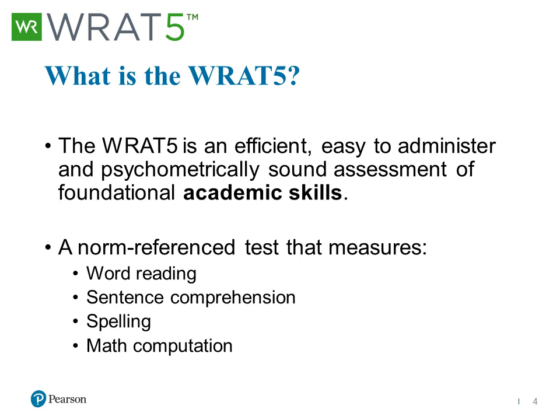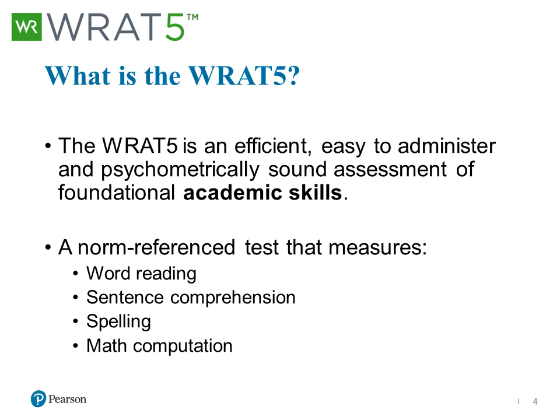We're really looking at foundational academic skills here, and I want to differentiate that from more comprehensive measures. Comprehensive measures — like the Wechsler Achievement Test, the Kaufman Achievement Test, the Woodcock-Johnson Achievement Test — look at skills from multiple data points. What the WRAT5 is giving us is an estimation of overall skill based on four data points: word reading, sentence comprehension, spelling, and math computation.